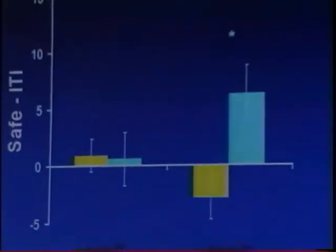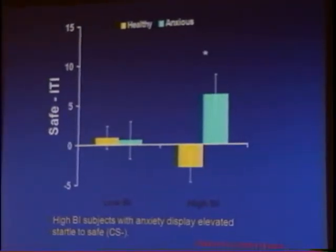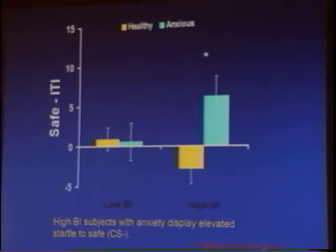The question is: will our behaviorally inhibited subjects startle more when they see the threat screen versus the safe screen, or will they startle the same? The data are pretty interesting. On the left are your low behaviorally inhibited kids. Looking at the difference between the safe green screen and the inter-trial interval, there is basically no effect of whether you are anxious or healthy within the low behaviorally inhibited subjects.